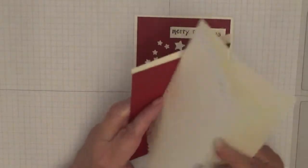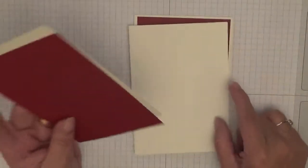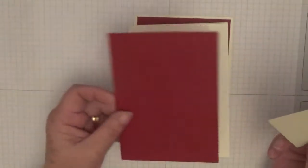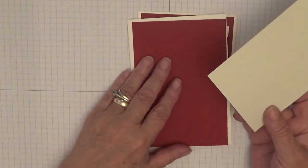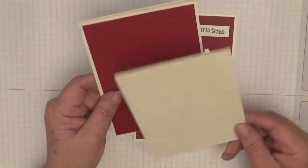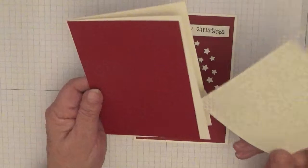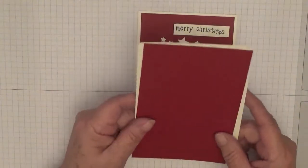To make this card, I've got a card base of Very Vanilla at 5 and 5/8 by 3 and 7/8, this is the thick Very Vanilla folded in half. I've got a piece of Cherry Cobbler at 5 and 5/8 by 3 and 7/8, and a piece of thin Very Vanilla at 5 and 5/8 by 3 and 7/8 for the inside.